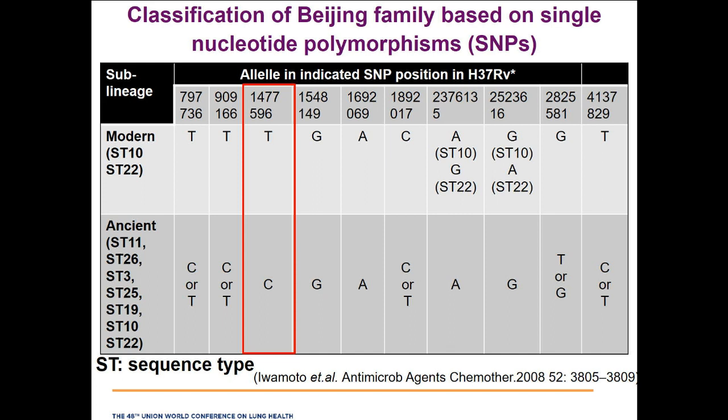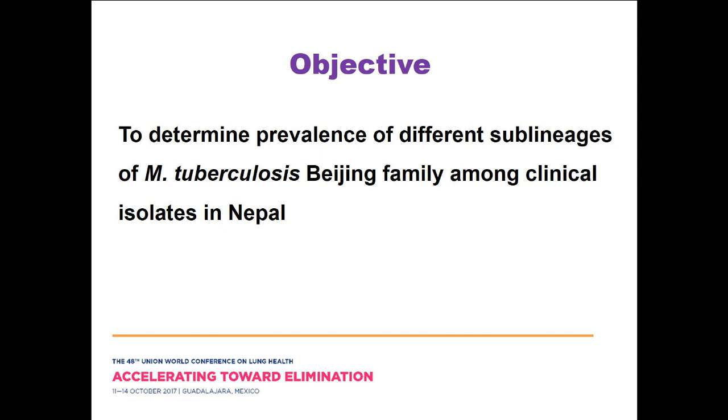For further classification to identify the sequence type (ST), we have to use other loci. But in this study I am presenting only one locus. If the modern lineage has T and the ancient lineage has C in this allele in mycobacterium tuberculosis, this SNP can be used for classification of the Beijing family. The objective of this study is to determine the prevalence of different sublineages of mycobacterium Beijing family among clinical isolates in Nepal.